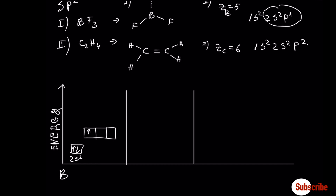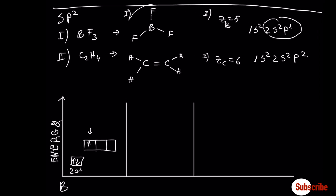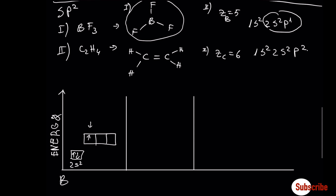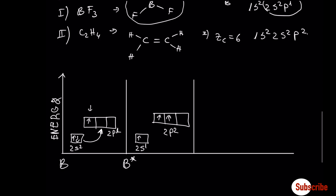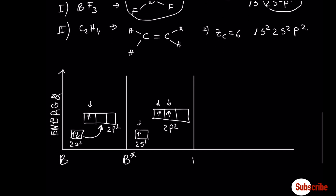As you can see here, boron can form only one bond because it has only one unpaired electron. But in our case, we have boron trifluoride. In order for boron to create three bonds, boron promotes one electron from the s to the p orbital. Boron goes to the excited state. We see here that we have the option to create three bonds, but they are not equal in energy. So we have to make hybridization.